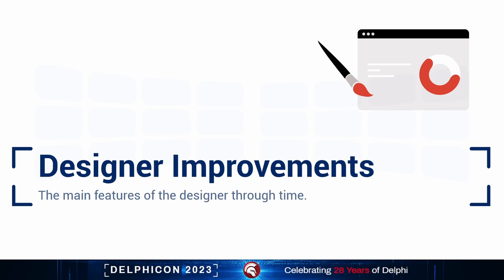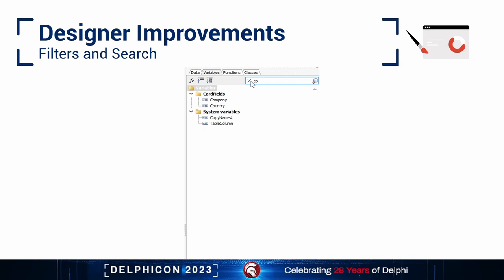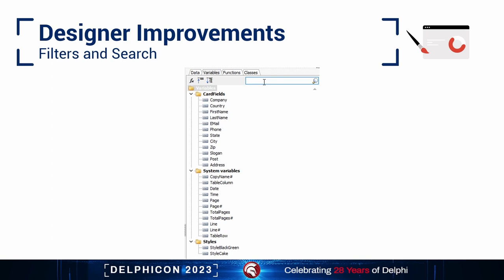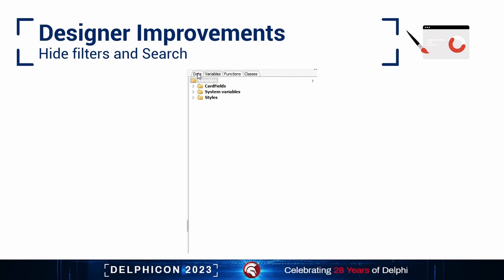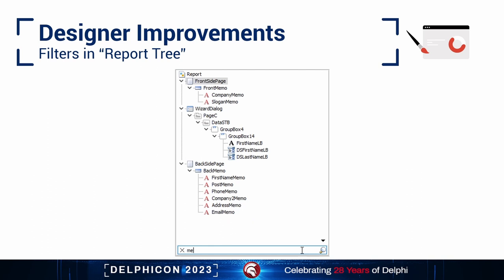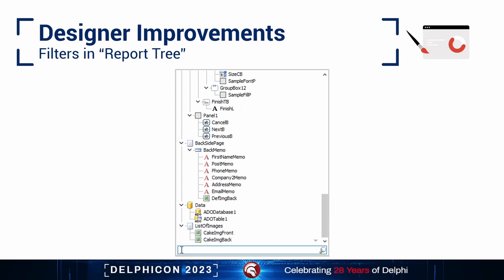Let's begin with a look at the recent designer improvements. We've added filtration to the data tree tabs, variables, and functions, so you can find all the necessary data fields and expressions with ease. It's now possible to hide all panels in the data tree. It's also possible to use filters in the report tree, which contains report objects, resulting in an improved searching experience.